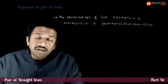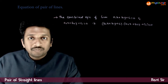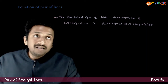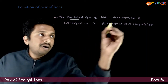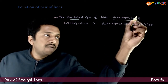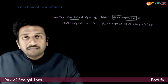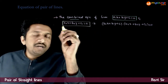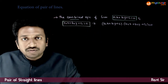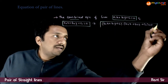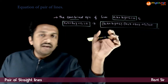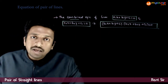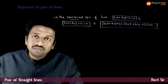Welcome students. In this video, let us look at the topic of pair of lines. The combined equation of the lines a1x + b1y + c1 = 0 and a2x + b2y + c2 = 0 is the equation (a1x + b1y + c1)(a2x + b2y + c2) = 0.